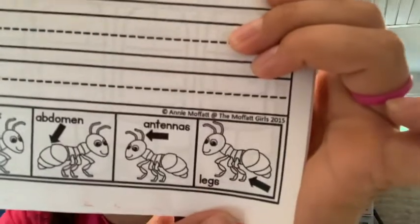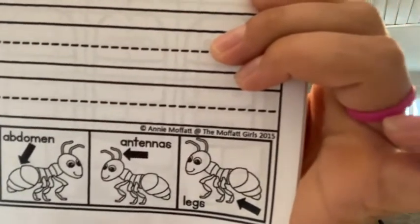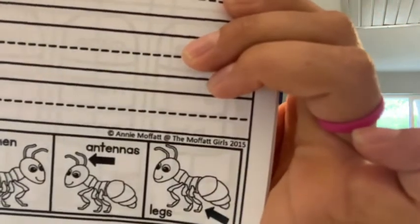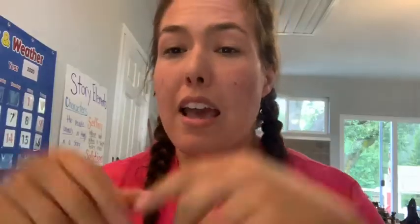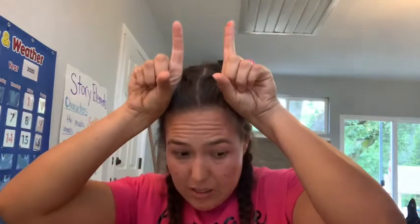And of course we have their legs. We know that ants have six legs, and boy oh boy are those legs strong — they can lift almost ten times their body weight. Yeah, ants are like Hulk strong!